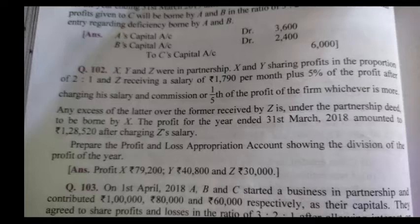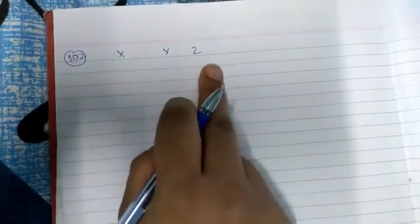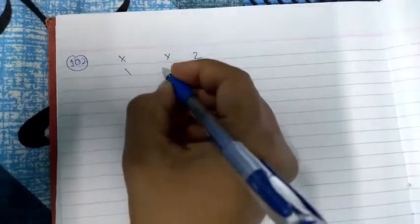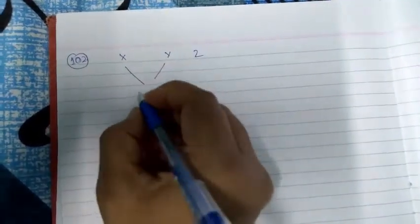Hello students, today we will start D.K. Goyal's question number 102. This question is actually a student's demand question. They have problems with this question, so today we will solve this question. From tomorrow we will start the new topic. So let's begin with question number 102. In the question, we have said that X, Y and Z, they are partners in a partnership. X and Y are sharing profit in the proportion of 2 is to 1.